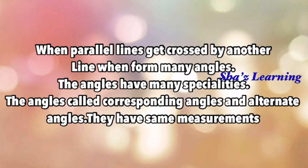When parallel lines get crossed by another line, the angles formed have many specialities. The angles are called corresponding angles and alternate angles. They have the same measurements. We are doing corresponding angles — the angles formed by alternate angles also have the same measurements.